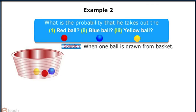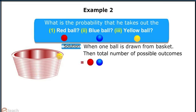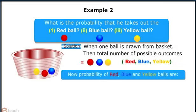Let's take the solution. When one ball is drawn from the basket, then total number of possible outcomes is 3. Now, probability of red, blue, and yellow are: